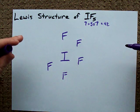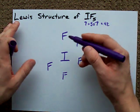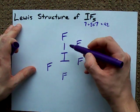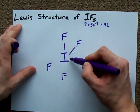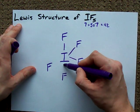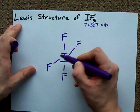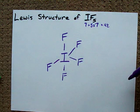Next, put electrons in your bonds: 2, 4, 6, 8, 10 electrons.